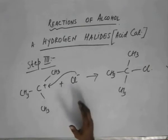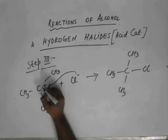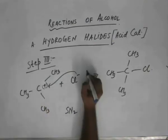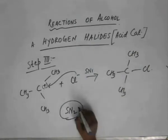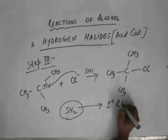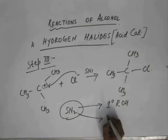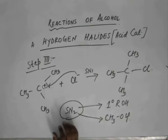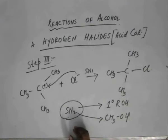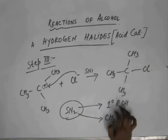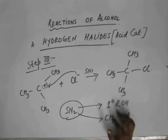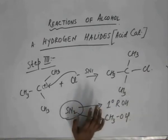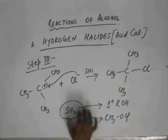Not all alcohols follow SN1 reaction — some follow SN2 also. Mostly primary alcohols follow SN1, and methanol follows SN2 reaction. They do not follow SN1 because SN1 is governed by the formation of a carbocation. In SN2, the formation of a carbocation is never favored, because a less stable carbocation is generated — a primary carbocation is formed. In CH3+, there are no alpha hydrogens in this carbocation when it is formed. So SN1 reaction is not favored; rather SN2 reaction is favored, where the whole reaction goes through a concerted mechanism or the transition state.